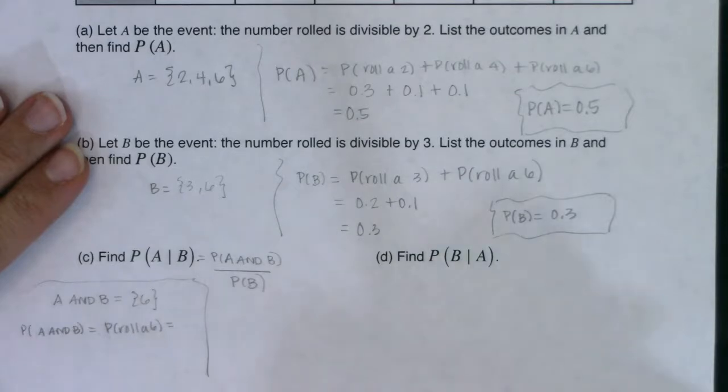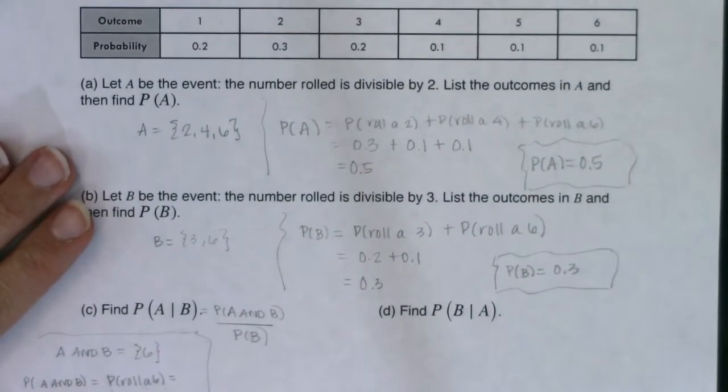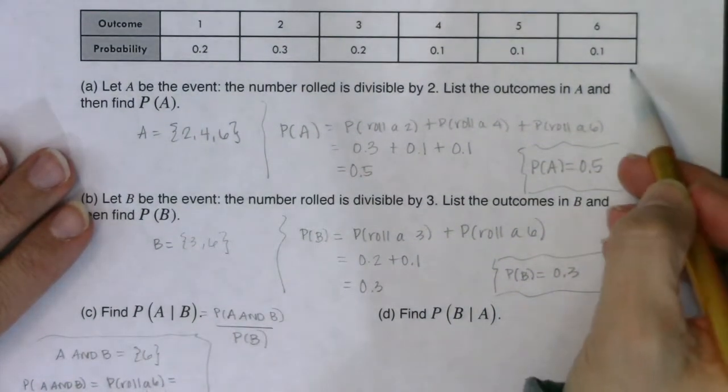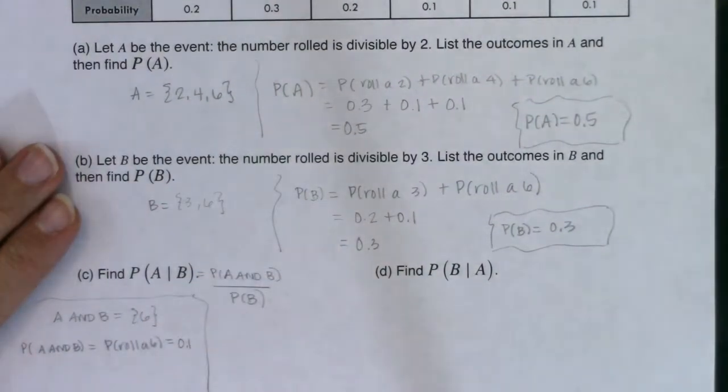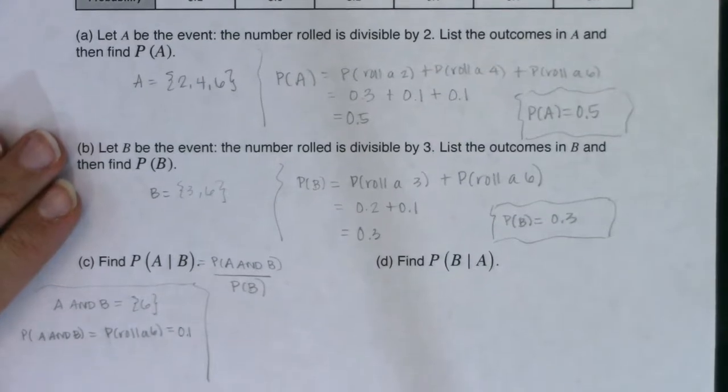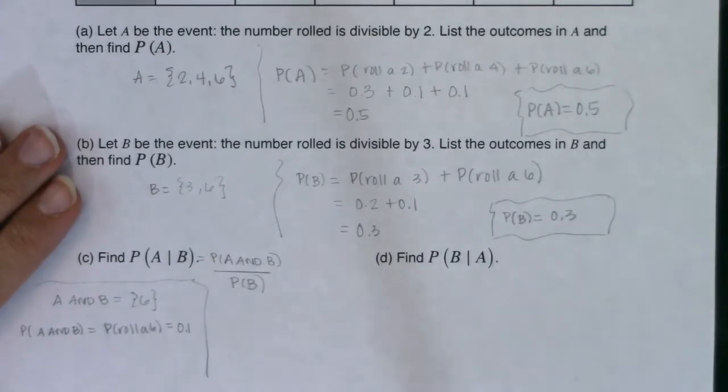And if we remember from our table, what was the likelihood that I was just going to roll that 6? It was up here at 10%. All right, so going back to part C now, all right?